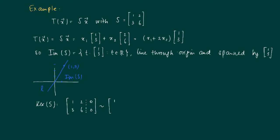And then, since the second row is just a multiple of the first row, we get the following expression for the reduced row echelon form.